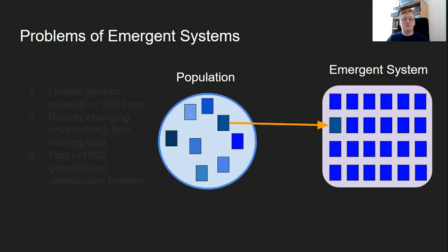Where does genetic improvement come in? Genetic improvement provides us with a population of variants of each of these code blocks that we can optimize at runtime and insert an optimized block into our emergent system to respond to environmental change.